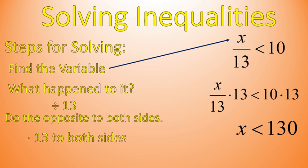We have to check our work. To check my work, I can plug in to the original inequality, x over 13 is less than 10, any number that is less than 130, and it will check whether the work is correct. I'm going to check using the number 130. So I'm going to plug in the number 130 and see what happens. If I plug 130 into the original inequality, 130 divided by 13 is 10, and I get the statement 10 is less than 10. That statement's false. So x is not equal to 130 — it has to be less than 130.